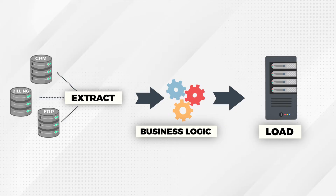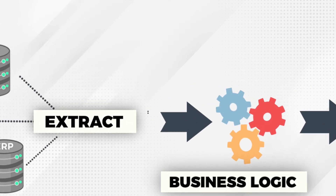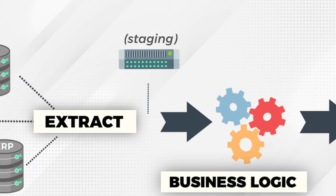A key point in this approach is that the transform process will only run against data that is extracted during the same run. To make this possible, the extracted source data is first moved, typically, to a temporary storage location. You may hear this referred to as the staging layer, which is just another database or schema being used for this purpose.